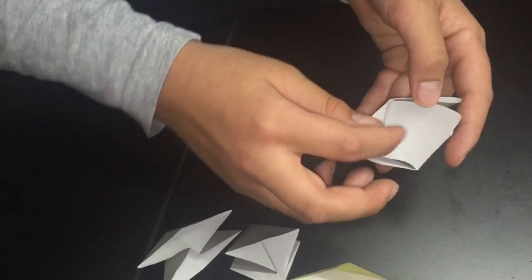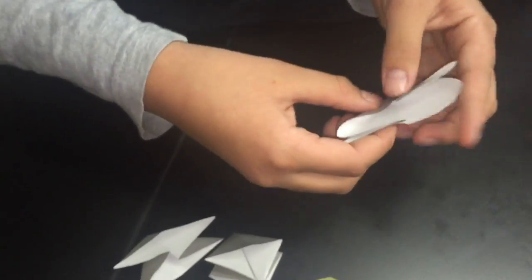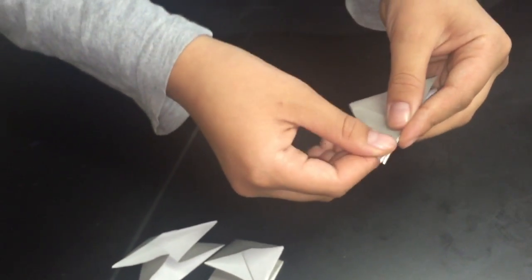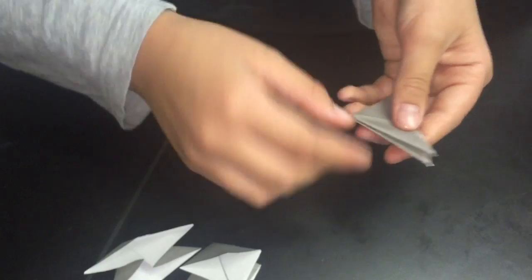Now open it up and fold it in half so that you're left with a triangle. And you need six of these so that you have 12 total pieces.